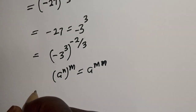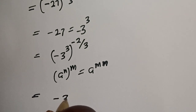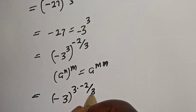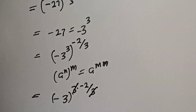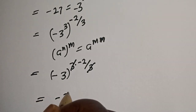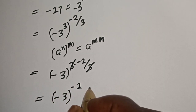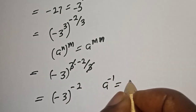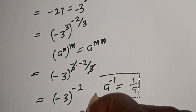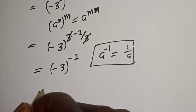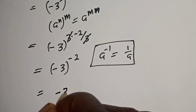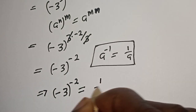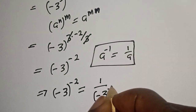This is equal to minus 3 raised to the power of 3 multiplied by minus 2 over 3. The 3s cancel, giving us minus 3 raised to the power of minus 2. Take note that if you have a raised to the power of minus 1, this is equal to 1 over a. So minus 3 raised to the power of minus 2 is equal to 1 over minus 3 raised to the power of 2.